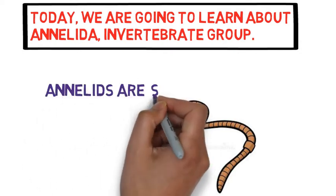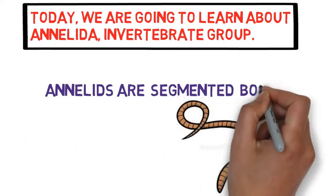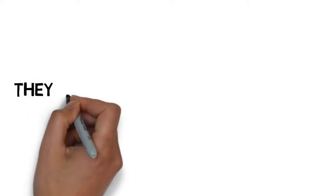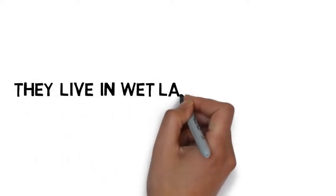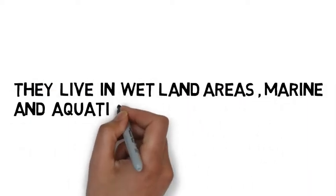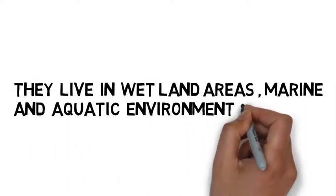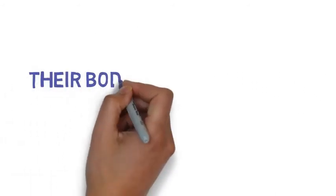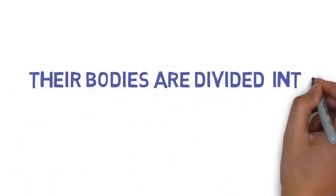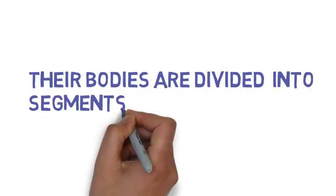Annelids are segmented-bodied organisms. They live in wetland areas, marine and aquatic environments. Their bodies are divided into segments.